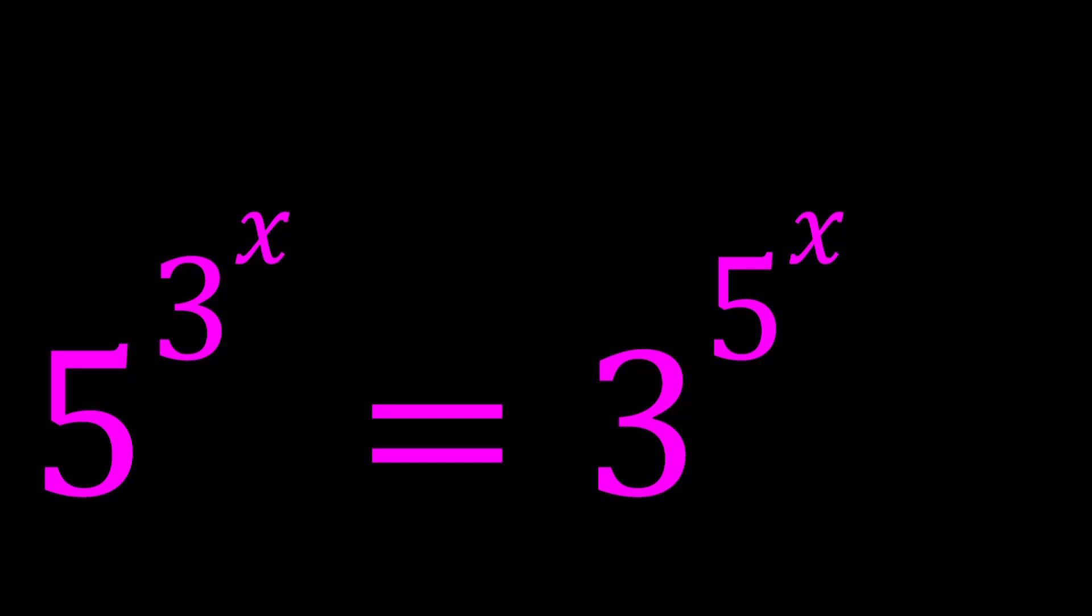Anyways, let me know what you think. We have 5 to the power 3 to the power x equals 3 to the power 5 to the power x. And we are going to solve for x values.